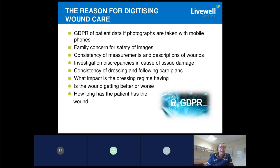We were also concerned around consistency of measurements and descriptions of wounds. We'd had many investigations where the investigator would really struggle to put together a timeline of when the wound deteriorated or got better. There were always discrepancies in tissue typing, mainly because that is such a subjective topic — two sets of eyes can see very different things. There were also concerns about consistency of dressings and following wound care plans. We felt that a digital solution could support this and help improve healing rates, and really help us understand the impact of the dressing regime. How long has the patient's wound been in existence? For lower limb ulcers especially, we need to know the onset date and make a concerted effort to follow the lower limb guidance and get that wound healed as quickly as possible.